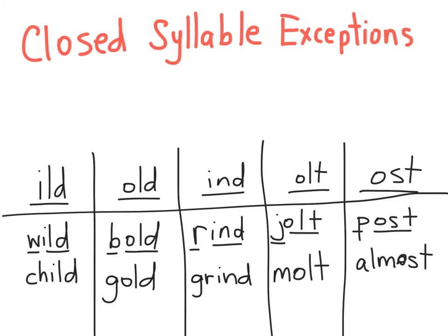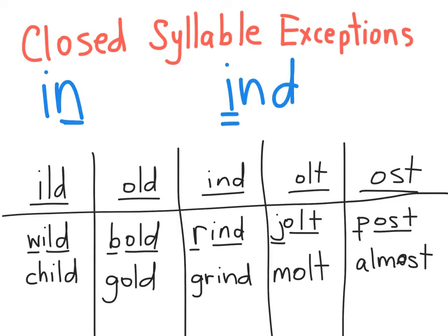We've been learning about closed syllable exceptions. Usually in closed syllables, the consonant after the vowel closes in the vowel, making the vowel say its short sound. But in a closed syllable exception, like IND, the vowel actually says its long sound.